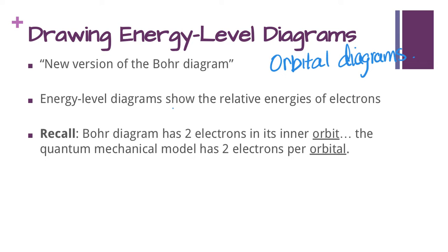What it's going to show is the relative energies of the electrons, and we're going to show the various different types of orbitals, sublevels, and how the electrons are filling those. Remember, the quantum mechanical model has two electrons per orbital. This is really important for this particular lesson.